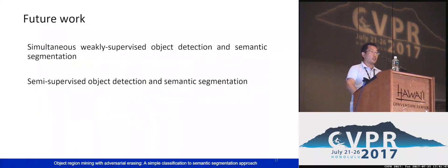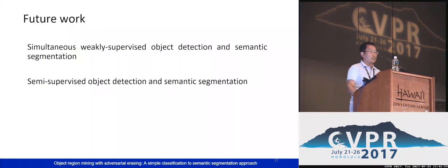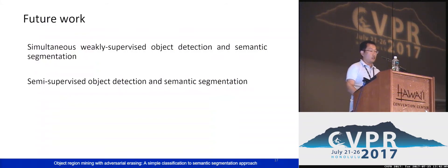In the future, we want to do two works. The first is simultaneous weakly supervised object detection and semantic segmentation. We consider these two tasks can benefit each other. Another is semi-supervised object detection and semantic segmentation. Because currently there are many labeled images, we hope that collaborating with many image-level labels, we can achieve new state-of-the-art results on many benchmarks.